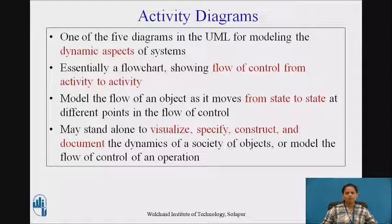Activity diagrams are one of the diagrams in the UML for modeling the dynamic aspects of systems. It is essentially a flow chart showing flow of control from activity to activity. This involves modeling the sequential and possibly concurrent steps in a computational process. With an activity diagram, we can also model the flow of an object as it moves from state to state at different points in the flow of control.